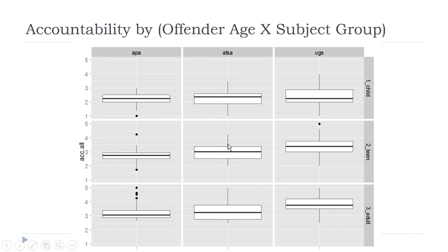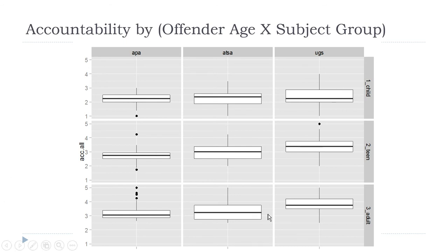For teenagers, there's a very clear upward progression. APA members are lowest, then ATSA members assuming offenders are slightly more accountable, then undergrads assuming even more. These differences between medians don't look like much, but with big sample sizes even small differences can be statistically significant. For adults, the pattern for teenagers is repeated — everybody has higher levels of accountability, but undergrads still have more than the others.